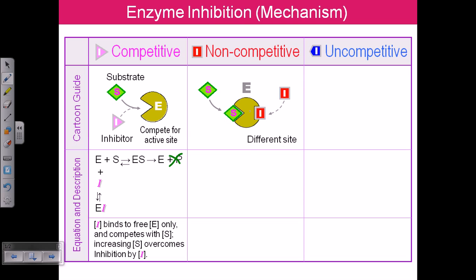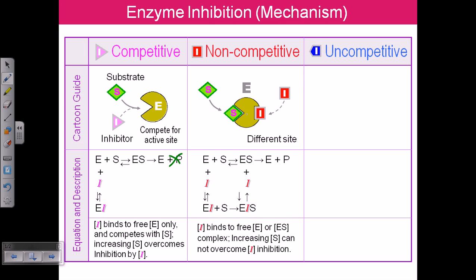In non-competitive inhibition, the enzyme is there and the substrate can come and bind with it. On the other hand, there is a different site where the inhibitor can come and attach. This different-site inhibitor attachment leads to blockage at the enzyme-substrate complex state. The inhibitor can bind not only with the free enzyme but also with the enzyme-substrate complex, blocking it into an inactive state.